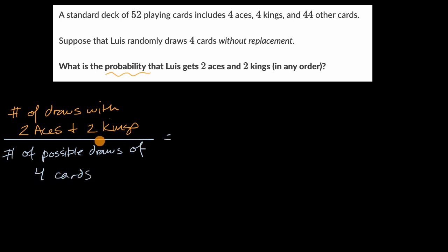Now for many of you, this denominator here might be a little bit easier to think about. We know that there's 52 total cards of which we are choosing four. So we could say 52 choose 4, and that will tell us the total number of possible draws of four cards.